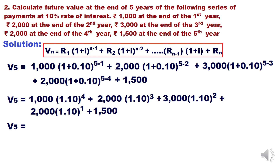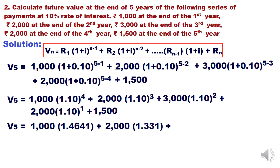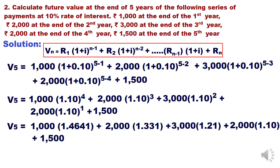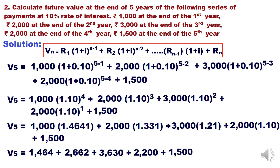Simplifying further: 1000×(1.1)^4 + 2000×(1.1)^3 + 3000×(1.1)^2 + 2000×(1.1)^1 + 1500. This gives 1000×1.4641 + 2000×1.331 + 3000×1.21 + 2000×1.1 + 1500, which equals 1464 + 2662 + 3630 + 2200 + 1500 = 11,456. So the future value of these non-uniform amounts deposited annually at the end of the year is 11,456 rupees.